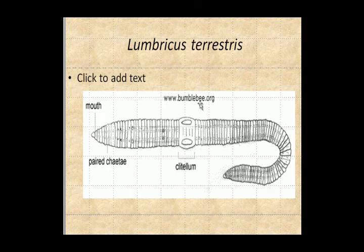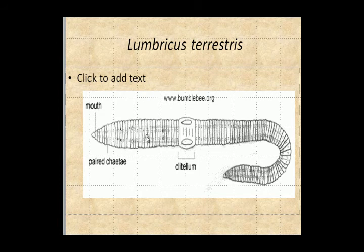The oligochaetes — we're going to look at Lumbricus terrestris, the common earthworm. This is the underside; there's actually a top and bottom to an earthworm. The top doesn't have this structure. This is the bottom, and this is the clitellum. The clitellum will bind to another clitellum from another earthworm to pass sperm. The little setae, or chaetae, are these tiny dot-like structures on the bottom that provide friction and grasping for locomotion.